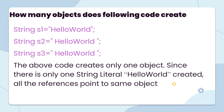The next question is: how many objects does the following code create? The above code creates only one object, since there is only one String literal. Here, 'helloBud' is created and all the references point to the same object.